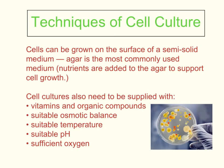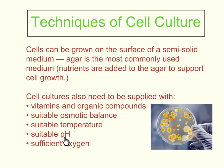This slide gives you an overview of the techniques of cell culture and some of the requirements we need in place to culture cells successfully. First of all, cells can be grown on the surface of a semi-solid medium, and agar gel is the most commonly used medium. Nutrients are added to the agar to support cell growth. Cell cultures also need to be supplied with vitamins and organic compounds, a suitable osmotic balance - which is very important for cell survival - suitable temperature, which is crucial for the enzymes inside the cells, pH, again important for the enzymes, and sufficient oxygen for the cells to produce energy via respiration.